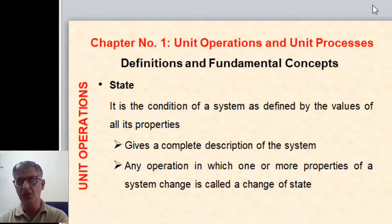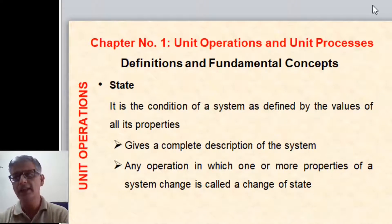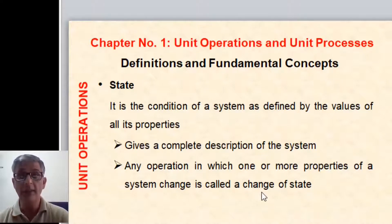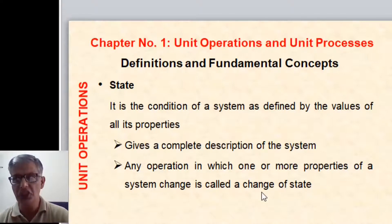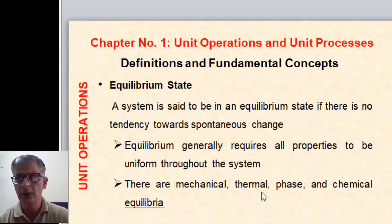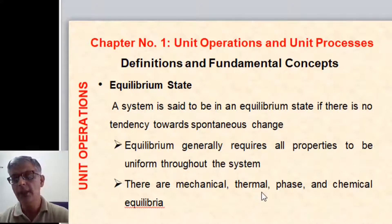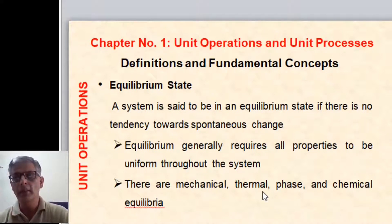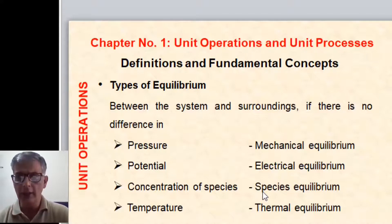Next is state: it is the condition of a system as defined by the values of all its properties. It gives the complete description of the system. Any operation in which one or more properties of the system change is called a change of state. Next is equilibrium state: a system is said to be in equilibrium if there is no tendency towards any spontaneous change. Equilibrium generally requires all properties to be uniform throughout the system. There are mechanical, thermal, phase, and chemical equilibria.